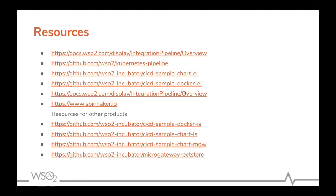Another question: how can I map different endpoints for carbon apps in different environments if the images are immutable? In this case, the carbon app would be pointed to a fixed Kubernetes service, and in each different environment you can attach the desired endpoint to that particular service. So the carbon app sees a single service in every environment, but in each environment that service points to a different endpoint.